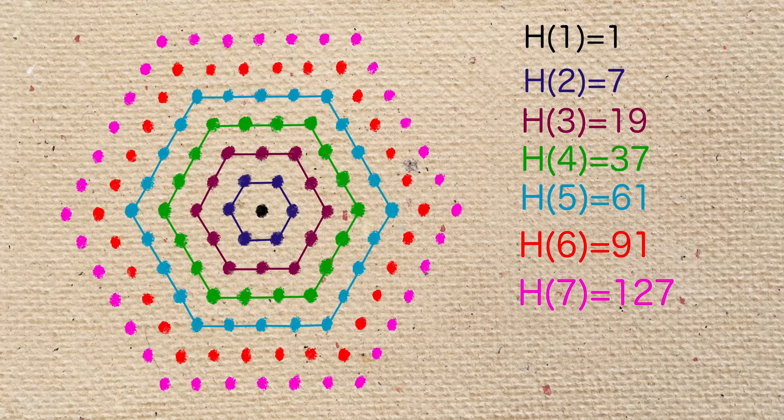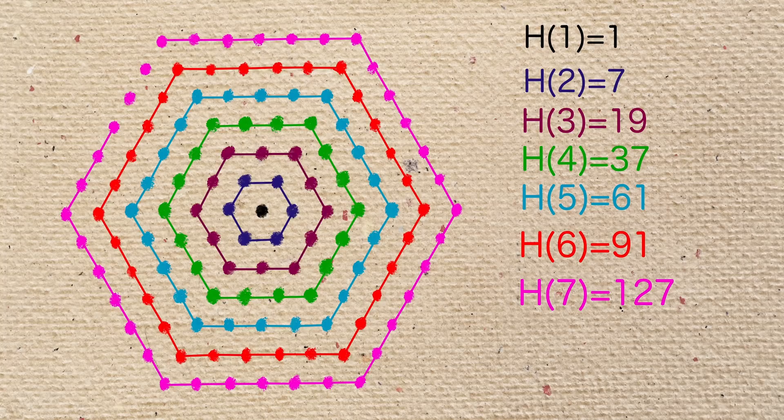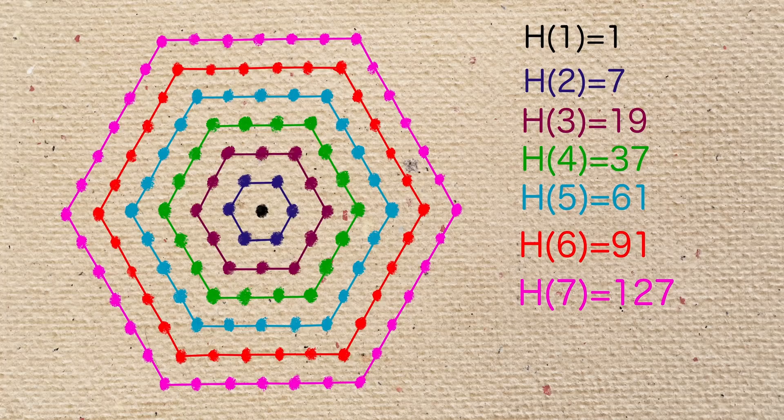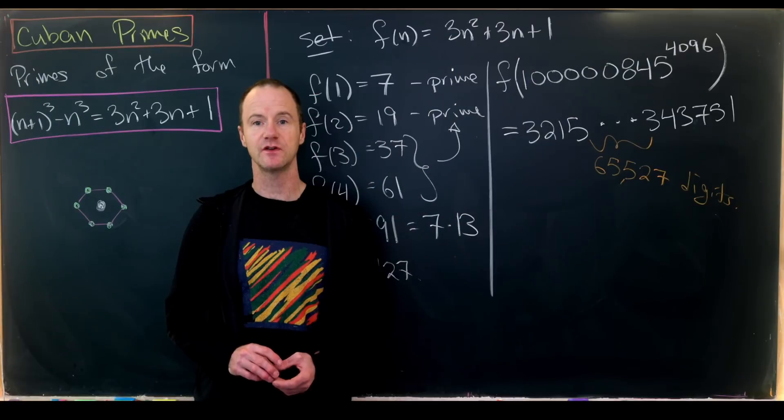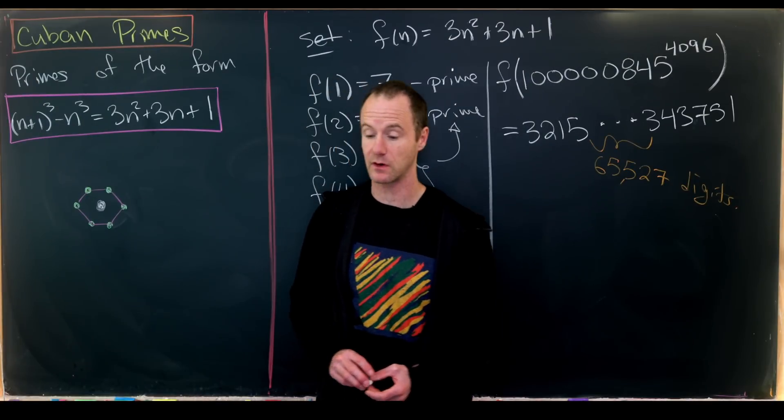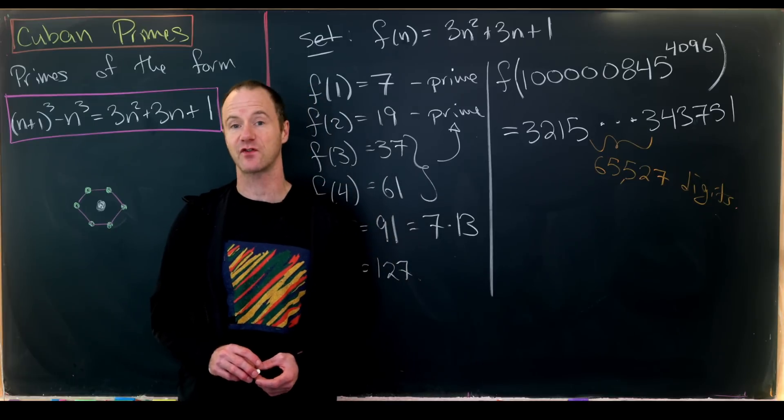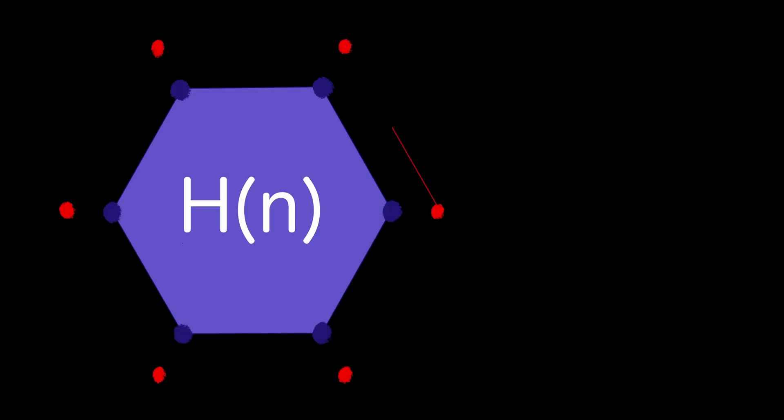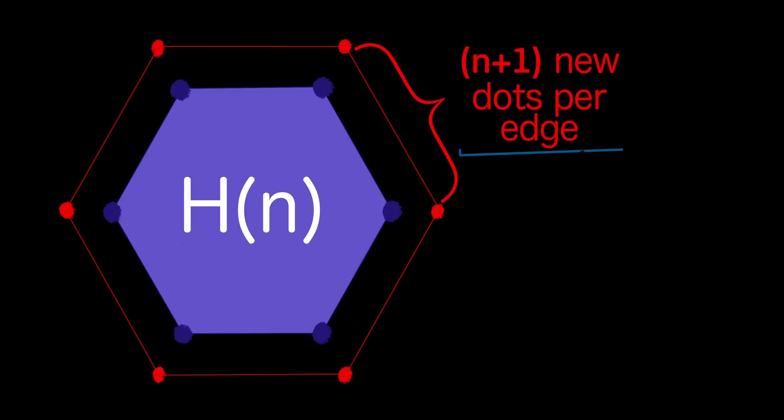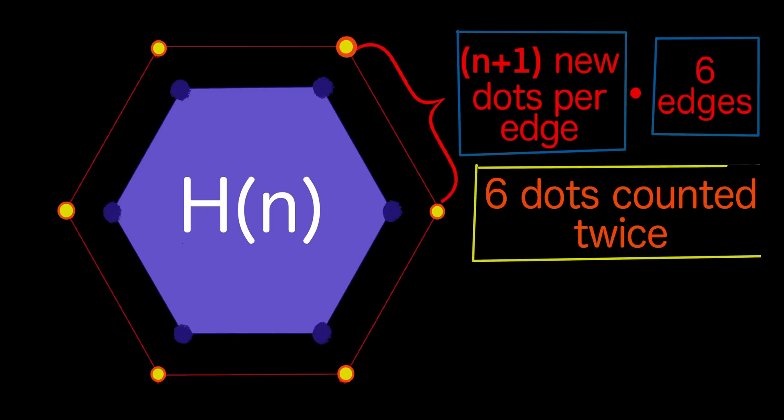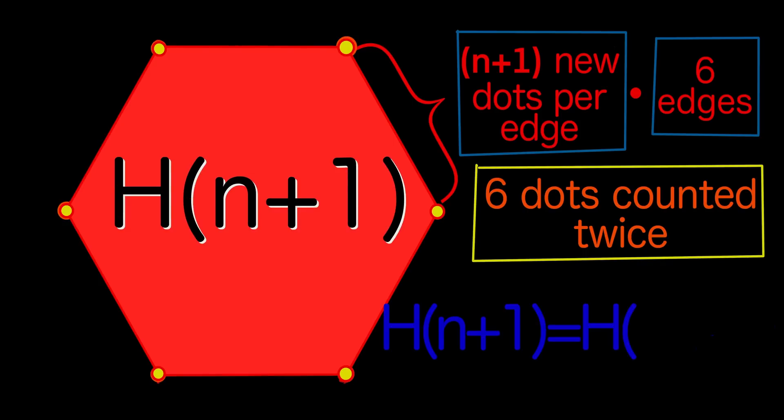We could keep drawing pictures, but let's work towards a general formula. With h(n) as the nth centered hexagonal number, we think about building h(n+1). We can add n+1 new dots to each of six edges, but we've overcounted the vertices, counting each twice. So we subtract 6, giving the recursion: h(n+1) = h(n) + 6n.